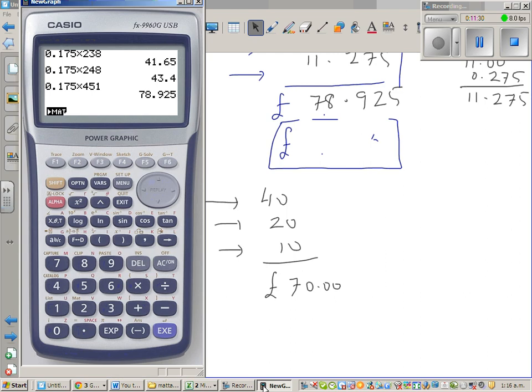So hopefully this is right. This should not be wrong. So 0.175 times 400, which is 70.